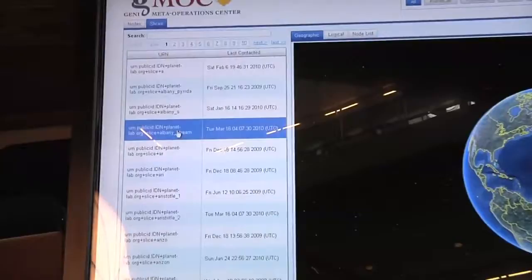We click on one of these and we should be able to see the set of nodes that are available in this particular slice. So it looks like we have a few nodes in the United States here that are a member of this slice.